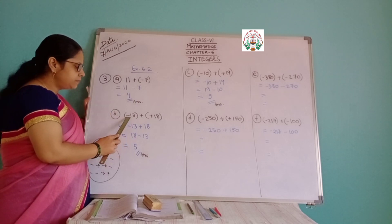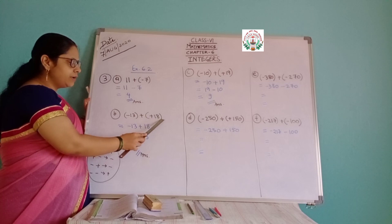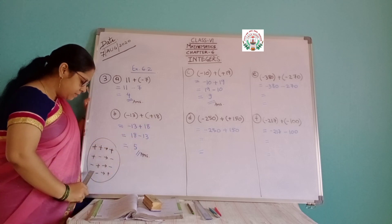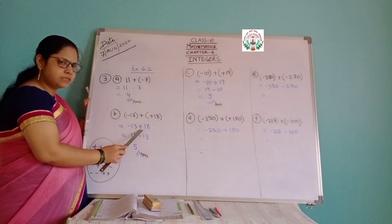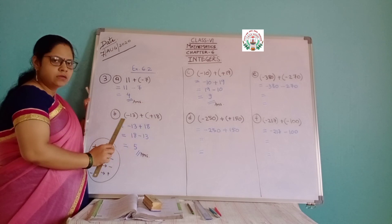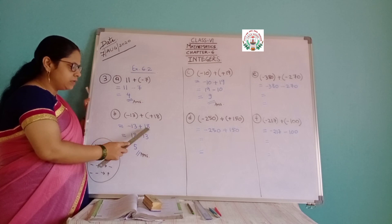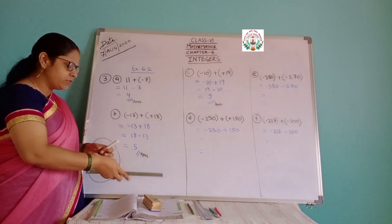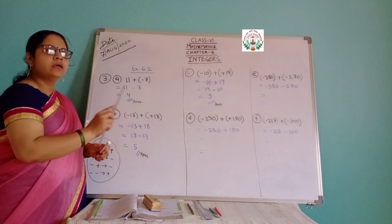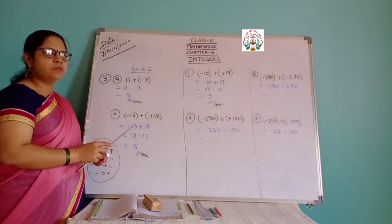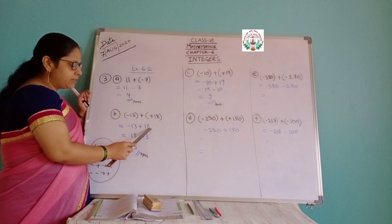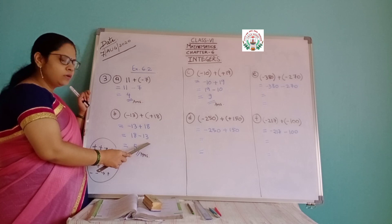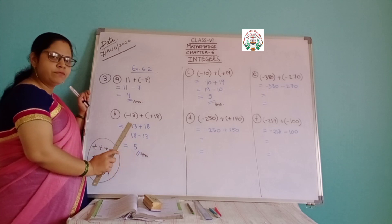Similarly, Part B: minus 13 plus plus of 18. Plus and plus coming together — similar sign — so plus will come. So we have minus 13 and plus 18. You can change the order by commutative law, which you have studied in Whole Numbers. So write 18 minus 13. That is a simple question — the answer is 5.